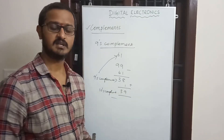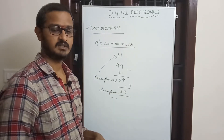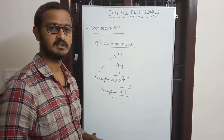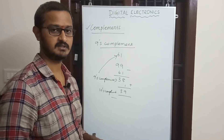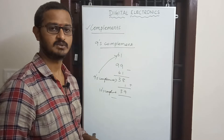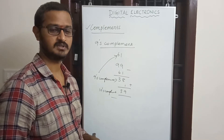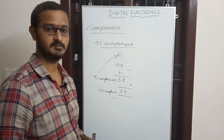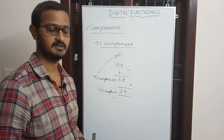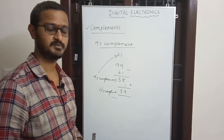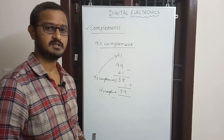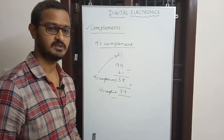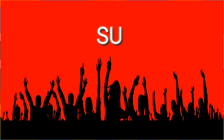So that covers 1's, 2's, 9's, and 10's complements. We will continue the digital syllabus in the next class. Next we will go into multiplexer, demultiplexer, decoder, and flip-flops. Hopefully within two or three days we will complete the digital syllabus. Thank you.